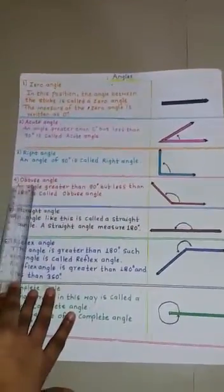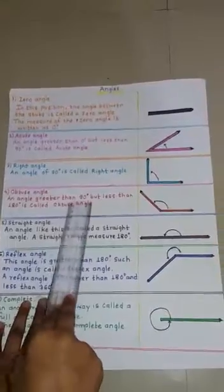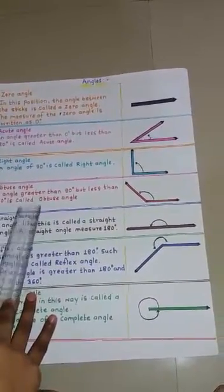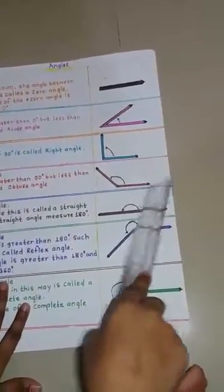4. Obtuse angle. An angle greater than 90 degrees but less than 180 degrees is called an obtuse angle. This is an obtuse angle.